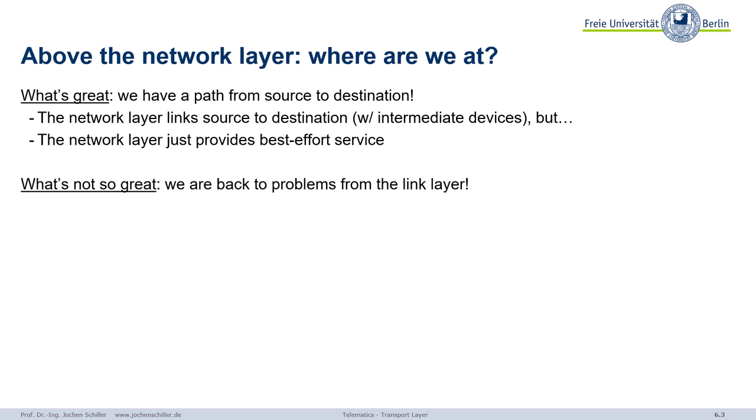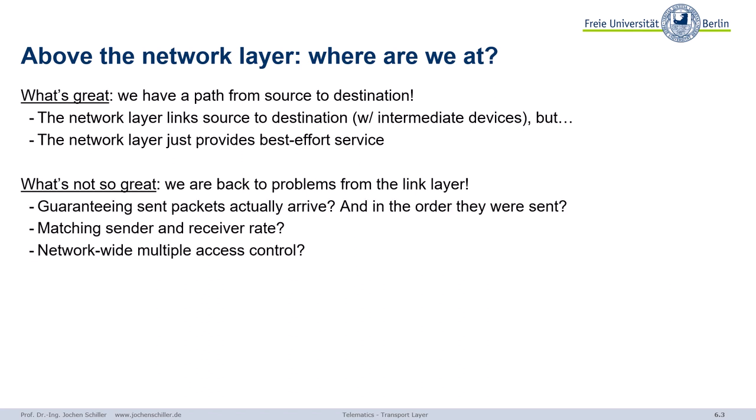Why from the link layer? Do we match the receiver rate — maybe we flood a receiver with too many packets per second? What about controlling access to the network? Do we create congestion? Can we guarantee transmission? What about the order of packets? On the link layer this was easier, but now we have the network layer in between with best effort. On layer 4, we want to guarantee something again. We'll face problems of the link layer regarding flow of data and sliding window.